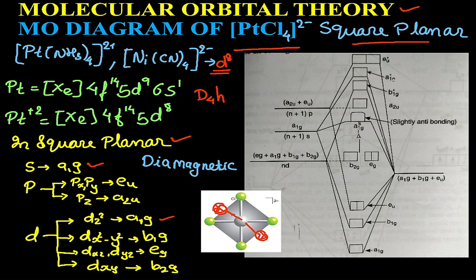dx²-y² will be designated as b1g, dxz and dyz will remain together as they have z component and that is eg, and dxy is b2g. So these are seven orbitals.